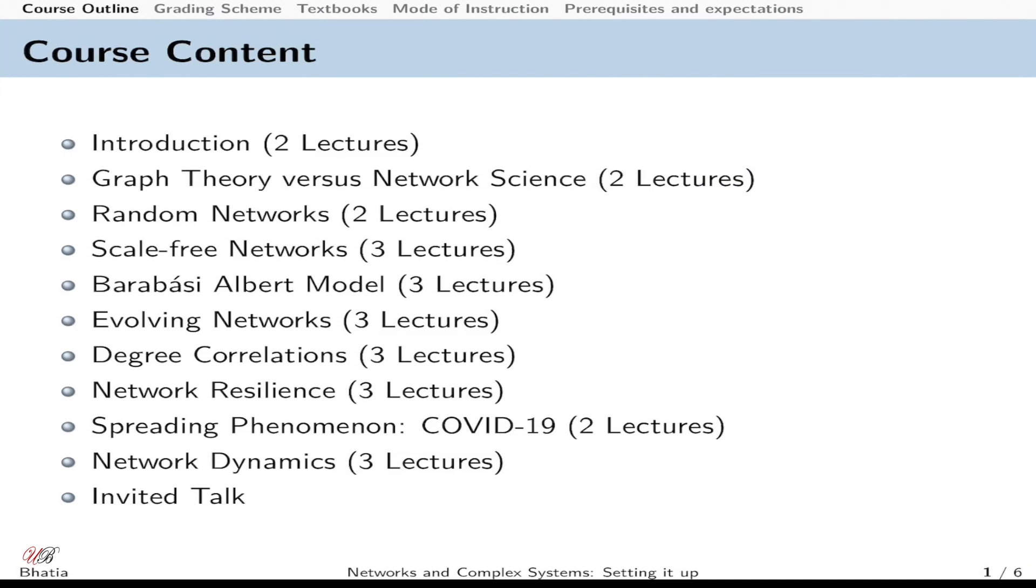We would be covering around seven to eight modules. I would not say chapters because these are a little bit more elaborative. We will start from introduction to graph theory and relation between network science, what are random networks versus scale-free networks versus evolving network models or generative models that shape the modern networks of today.